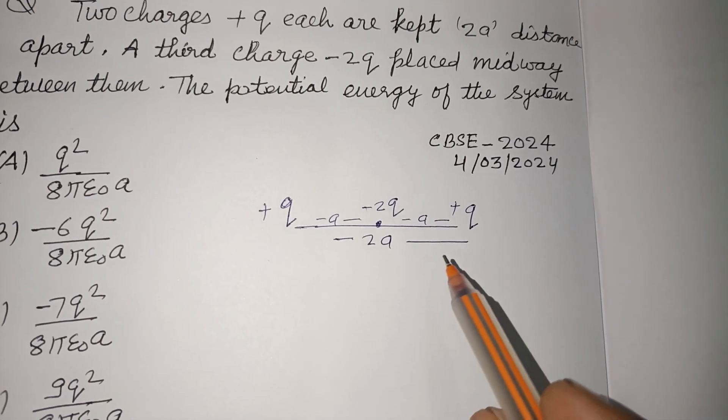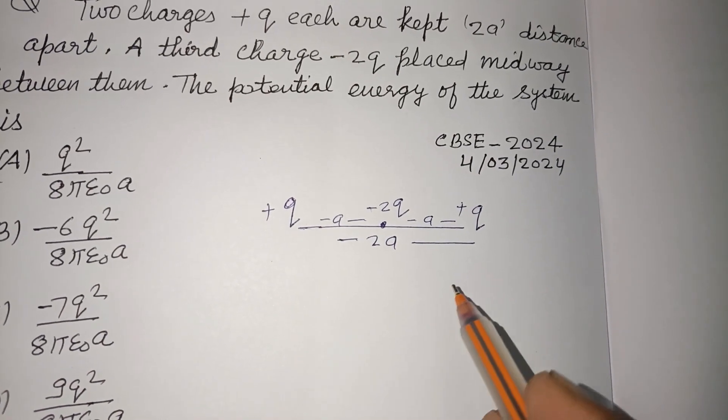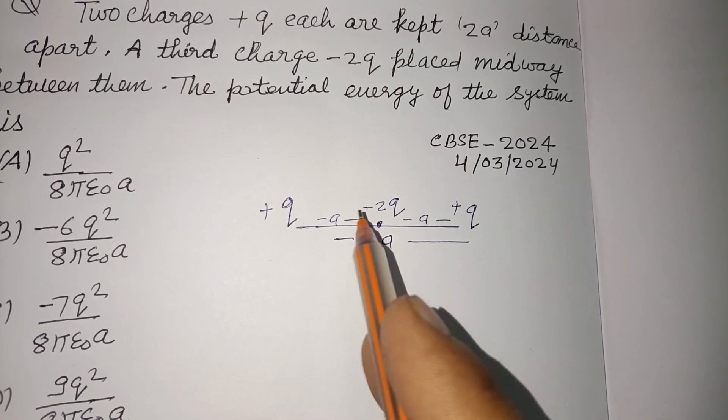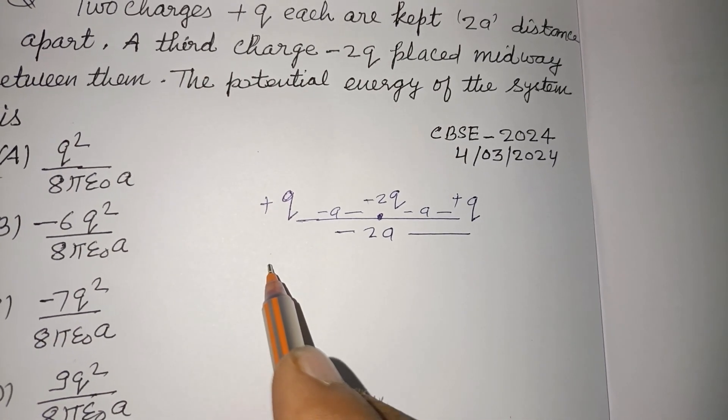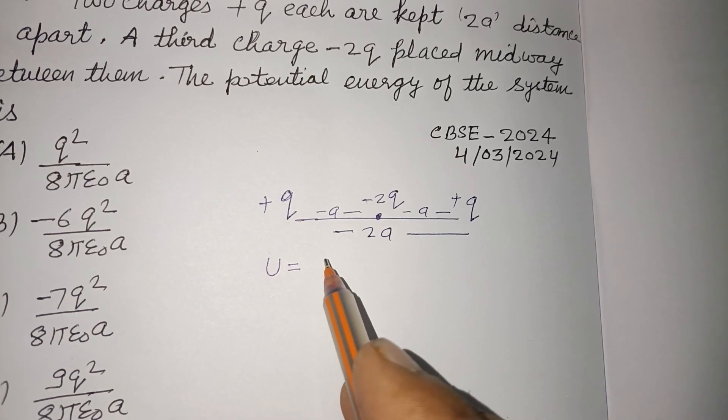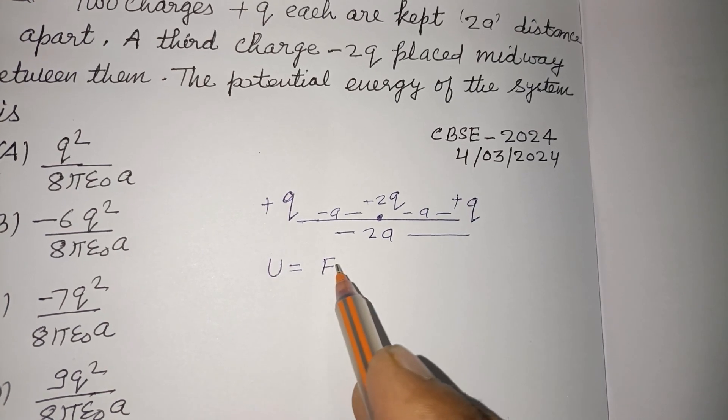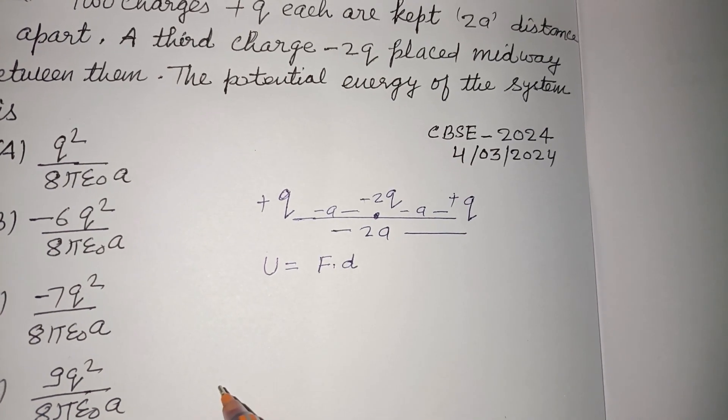The question is asking for the potential energy of the system. And you know that in a two charge particle system, potential energy U equals F into D.